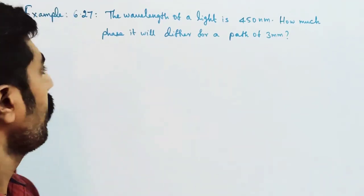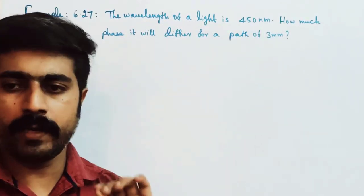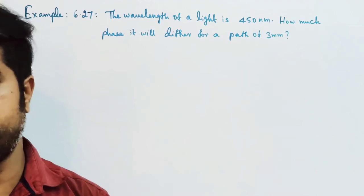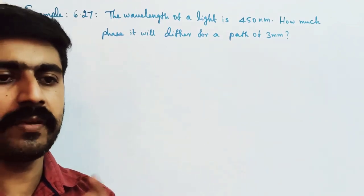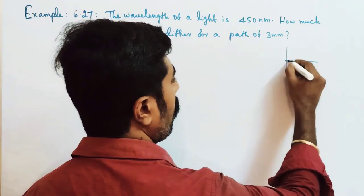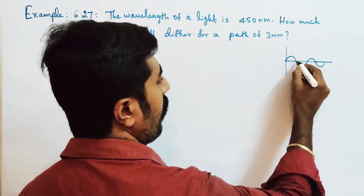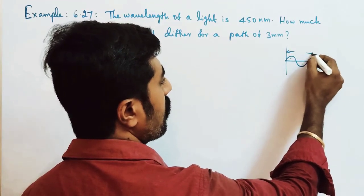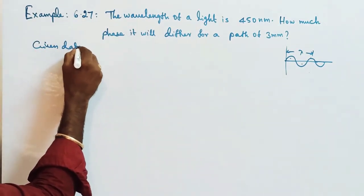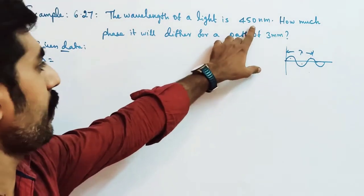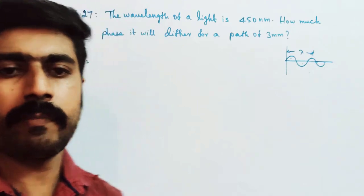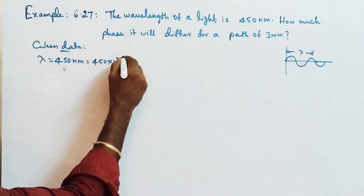The wavelength of light is 450 nanometer. One light source will travel in the form of a wave. The wavelength is 450 nanometer. The wavelength notation is called lambda. Given data: lambda = 450 nanometer, which is 450 into 10 power minus 9 meter.